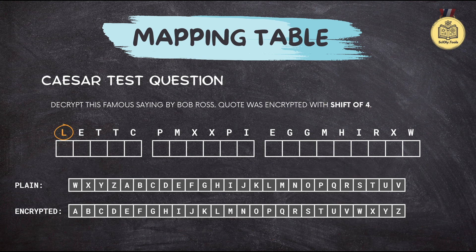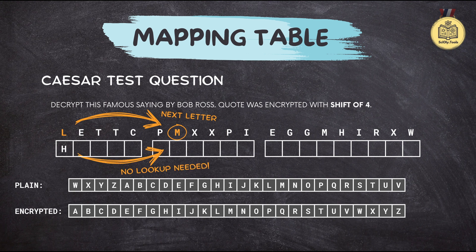So the first encrypted letter is L, and if you locate L on the bottom row of your mapping table, you'll see that it lines up with the letter H on the top row — that's your first decoded letter. Here's a cool trick: notice that M comes right after L in the alphabet. Since we already know that L decodes to H, M must decode to I. That's so much faster — a little mental shortcut.